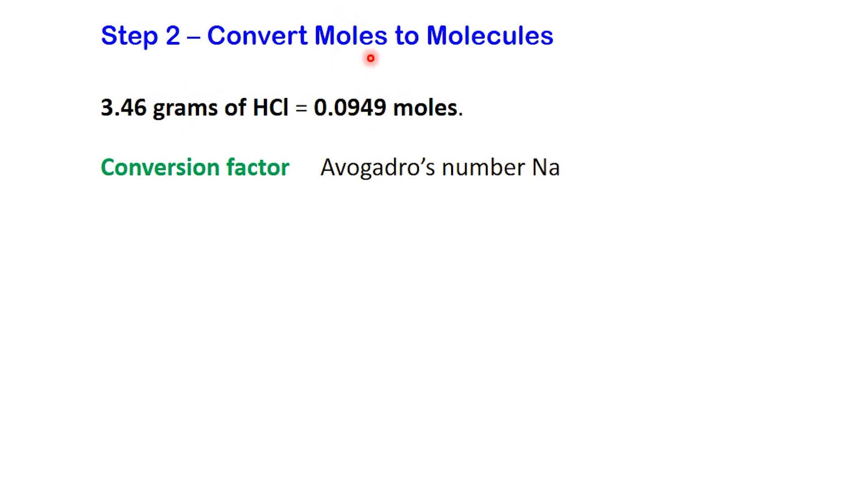Now for step 2, we're going to convert moles into molecules. To do this, we need another conversion factor. This time, the conversion factor comes from Avogadro's number, which tells us 1 mole equals 6.022 times 10 to the power of 23 molecules. This means that if we have 1 mole of any substance, it contains 6.022 times 10 to the 23 molecules.